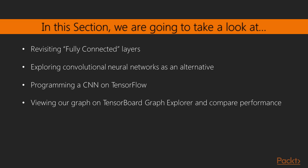We'll revisit fully connected layers, where each node on a neural network is fully connected to the previous layer. We'll then explore a neural network architecture much better suited to image processing: Convolutional Neural Networks.